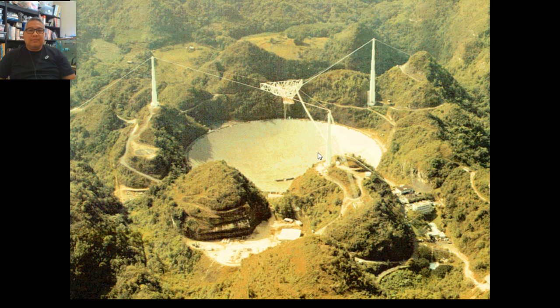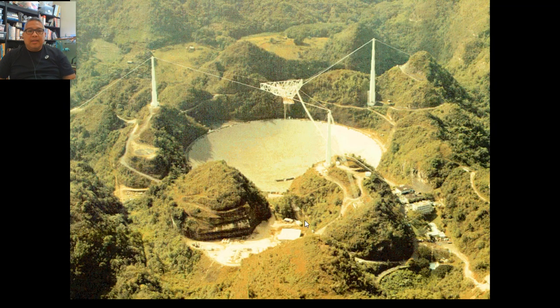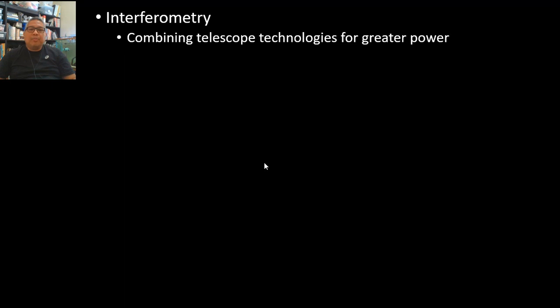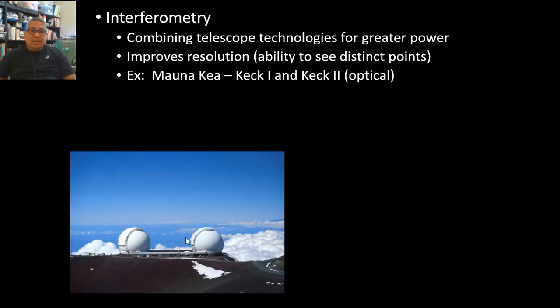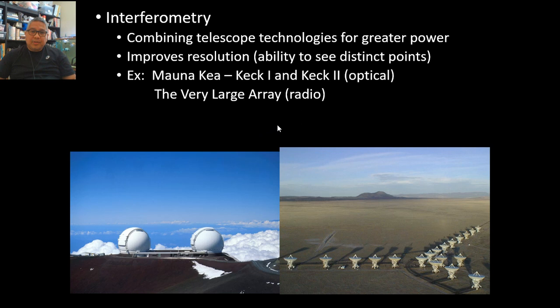Interferometry is when you combine telescopes for greater power. It improves resolution and the ability to see distinct points. If they're able to combine the images formed by the telescopes, like the Very Large Array of radio telescopes that covers huge amounts of area, you will have a bigger chance of collecting or amplifying the signals that you're getting from space. We'll continue with part two. Stay tuned. God bless.